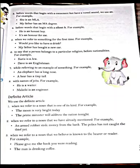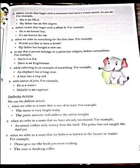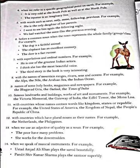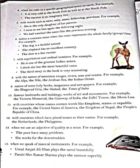So to refer to a noun we have already mentioned, we will use the definite article. Next: when we refer to a noun that we believe is known to the hearer or reader. For example: Please give me the book you were reading, or The man is drinking coffee. So when referring to a noun believed to be known, we use 'the'. Also, when we refer to a specific geographical point on the earth, we use the definite article, like: the South Pole, the North Pole.